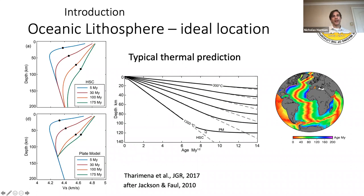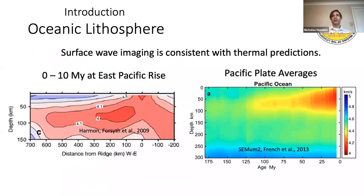At older seafloor ages, people have invoked the plate cooling model, which is essentially an empirical fit to heat flow and seafloor subsidence data but doesn't really have a physical process. There must be some sort of constant heat flux possibly related to small-scale convection. The jury's still out as to why the seafloor seems to flatten and heat flow seems to flatten at these older seafloor ages. Temperature seems to be doing a lot, but we don't have a full understanding of what's going on.